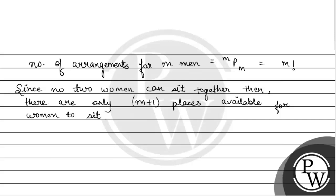Since N women can be arranged in M plus 1 places, यह जाएगा हमारा M plus 1 P N ways.